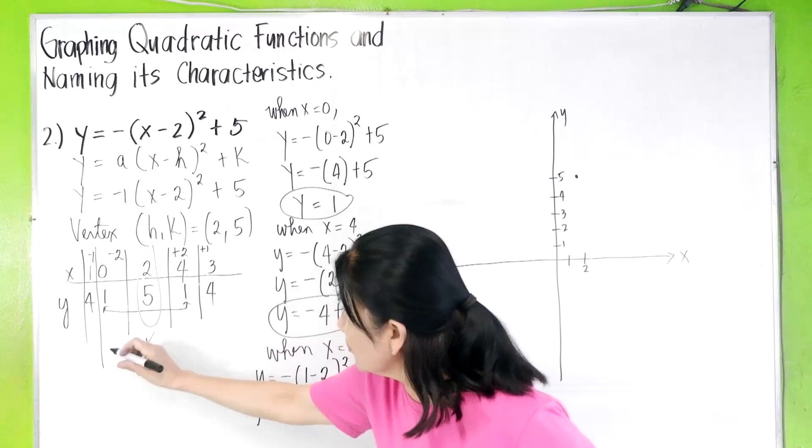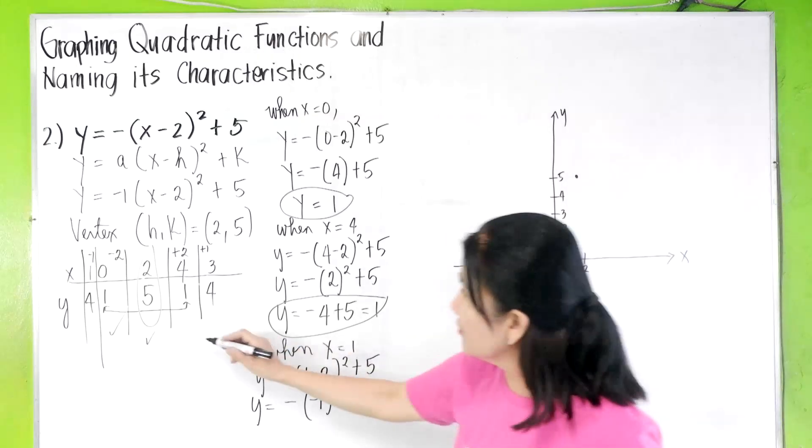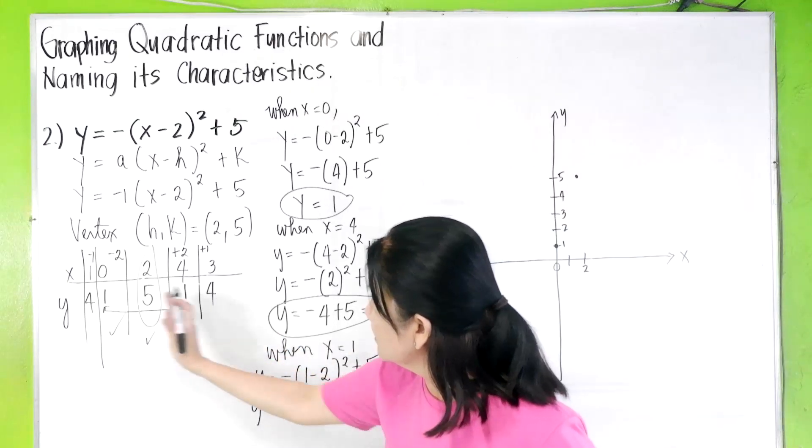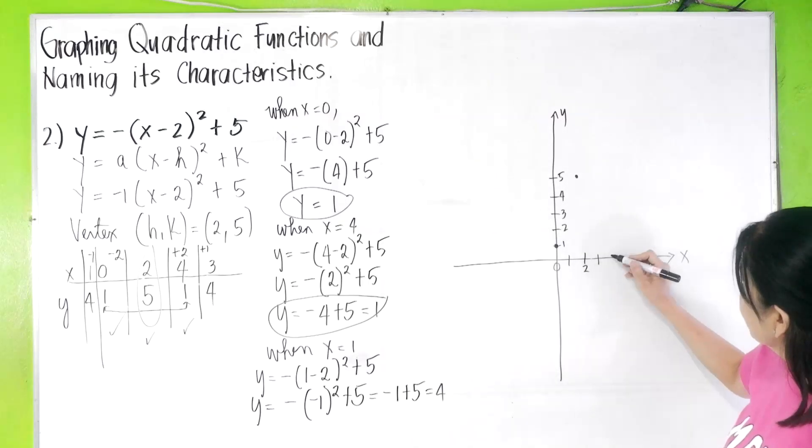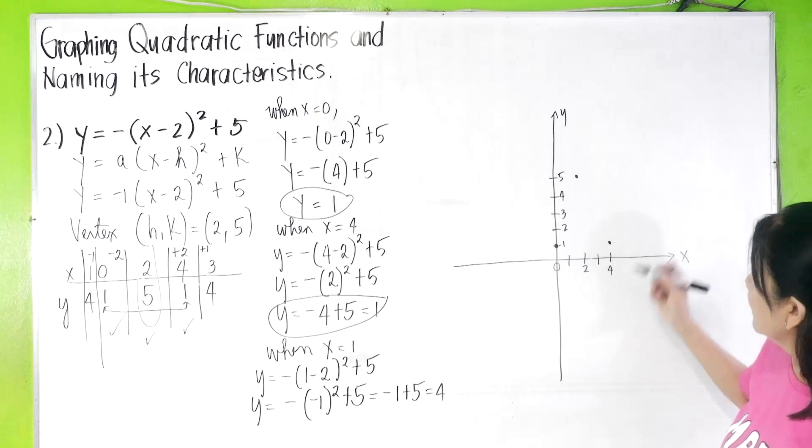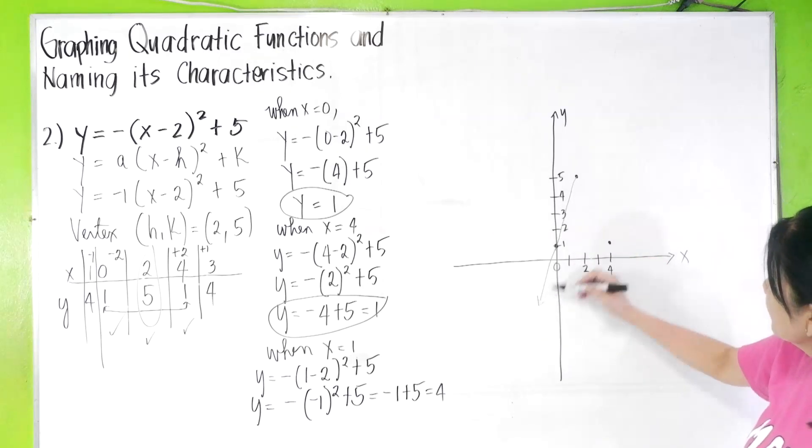Then we go zero, one, zero, one. This is zero, one, here. Then we have here four, one. Four, one, four, one, here, there. This will be enough. Then you connect this. There. Connect this. There.